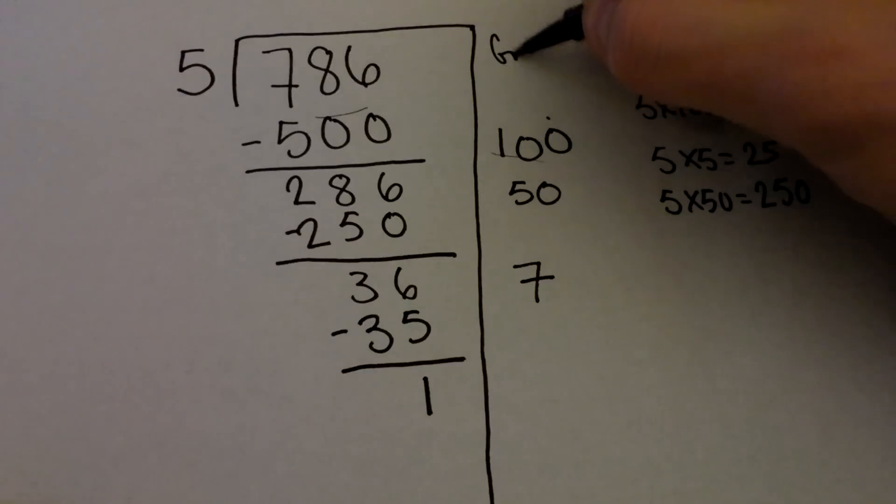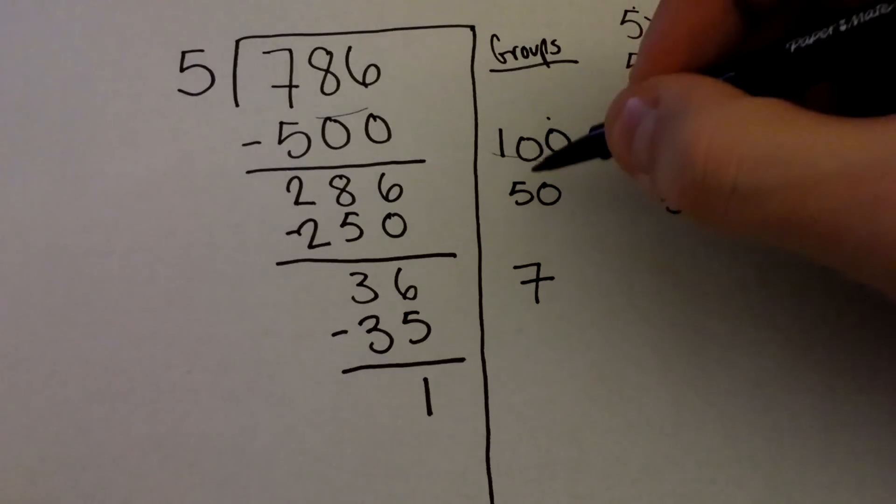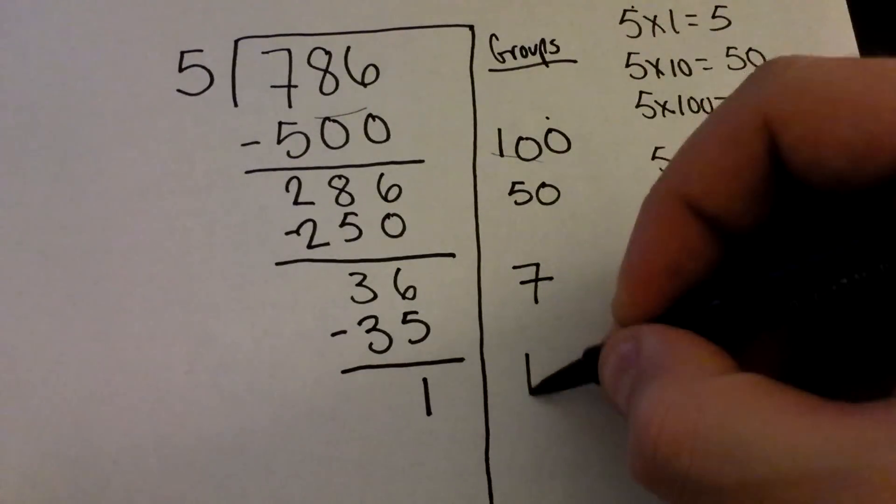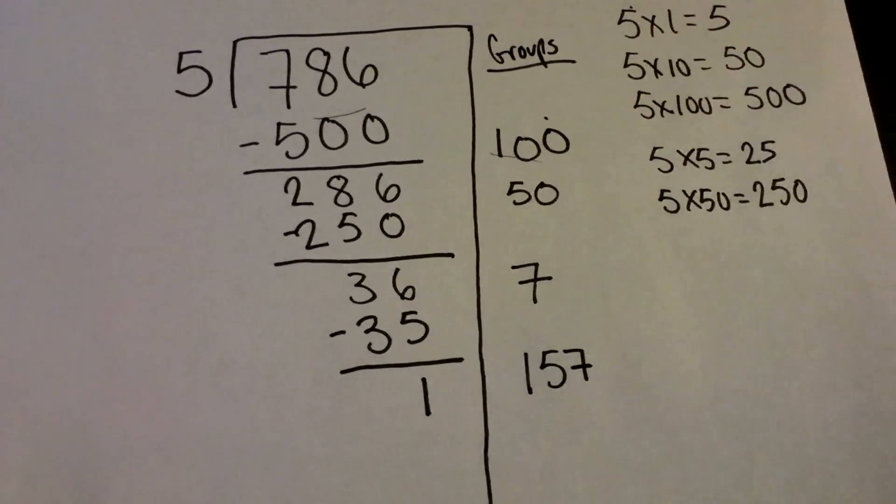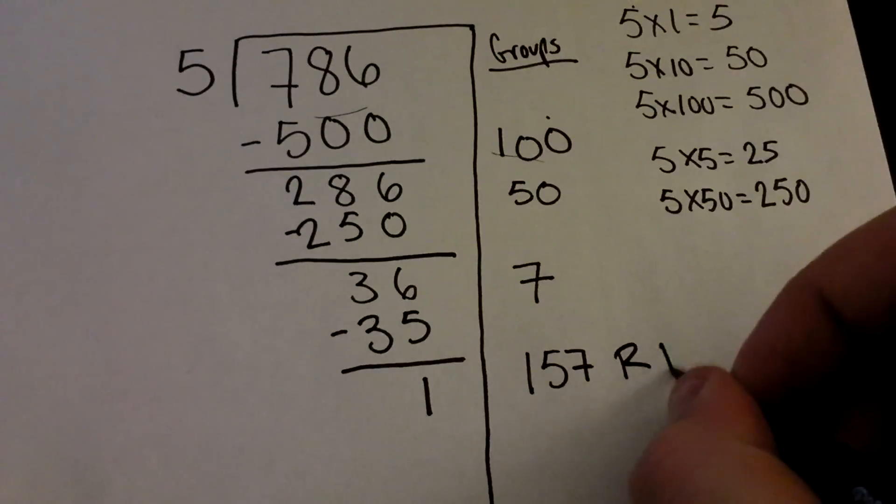Now reminder, this is the groups that we've taken out. We want to add these up. So we have 100 plus 50 plus 7. That'd be 157 groups that we've taken out. And we still have this one guy hanging out here. This is going to be our remainder. We have a remainder of 1.